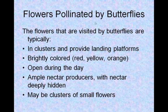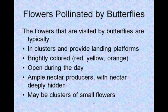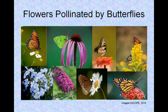Flowers pollinated by butterflies. The flowers that are visited by butterflies are typically in clusters and provide landing platforms. Brightly colored, like red, yellow, and orange. Open during the day. Ample nectar producers, with nectar deeply hidden, may be clusters of small flowers. These are some examples of flowers pollinated by butterflies.